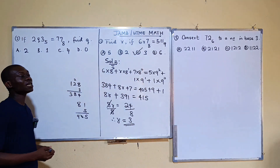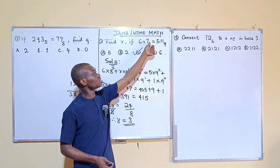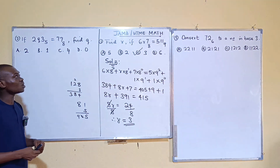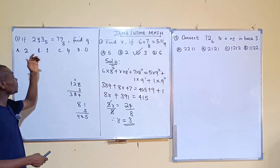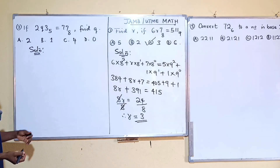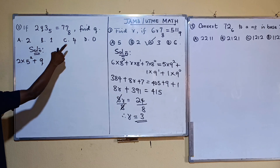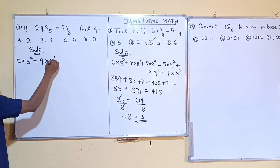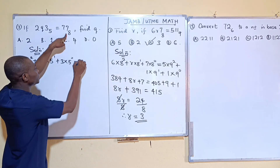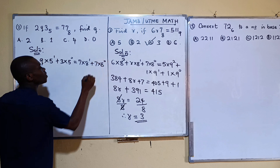That means putting 3 in place of r — 637 base 8 equals 511 base 9 — and if you convert both to base 10 you'll see the equality. For the second question, the same approach applies. We have 2 times 5 squared plus q times 5 to the power of 1 plus 3 times 5 to the power of 0, equal to 7 times 8 to the power of 1 plus 7 times 8 to the power of 0.